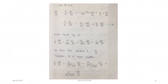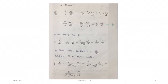Then we divide equation number 2 by R. R means resistance, so the left-hand side will be 1 by R into dR by dS. Then on the right-hand side, equation number 2 becomes rho by A into dL by dS minus...